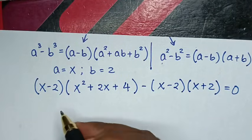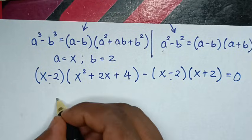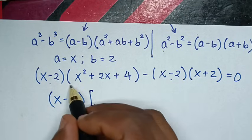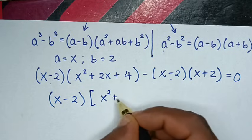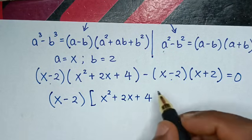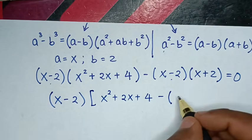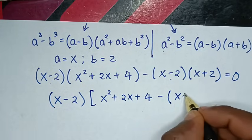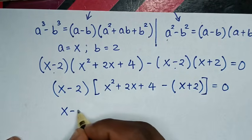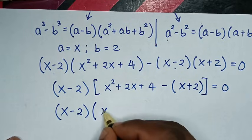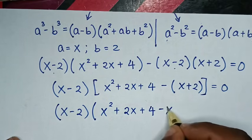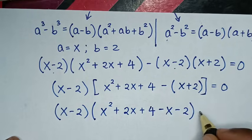The factor (x minus 2) is common to both terms, so we factor it out: (x minus 2) times open bracket (x squared plus 2x plus 4) minus (x plus 2) close bracket equals 0. Distributing the negative inside the bracket: (x minus 2)(x squared plus 2x plus 4 minus x minus 2) equals 0.